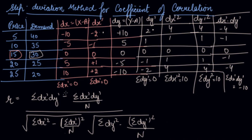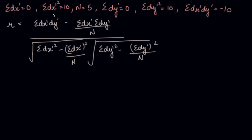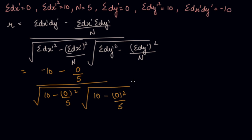We have got everything for the formula. Now put these values in the formula. These are the values which we have found out from the table. And this is the formula. Summation dx' dash and dy' dash is minus 10. Summation dx' dash is 0. Summation dy' dash is 0, divide by 5, which will be 0. Divide by dx' dash square is 10, minus 0, divide by 5. So minus 10, under root 10 into under root 10. We get minus 10 divide by 10. The answer is minus 1.